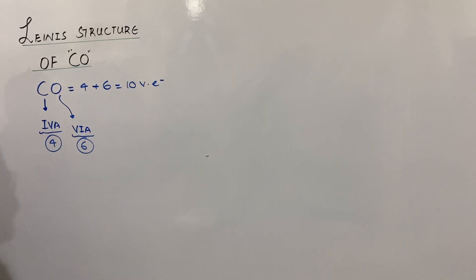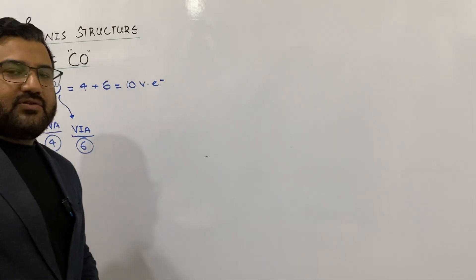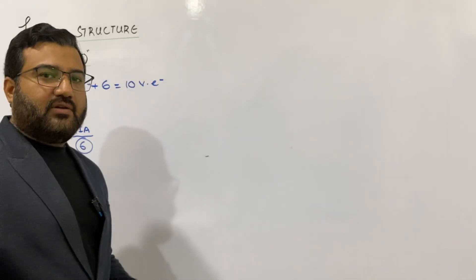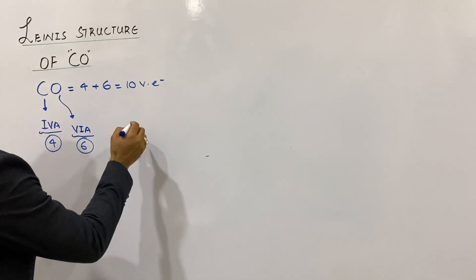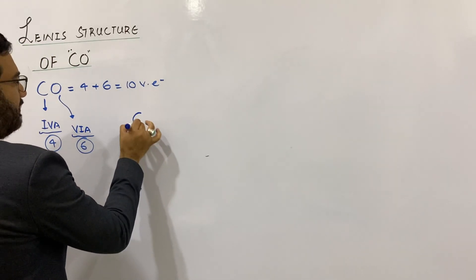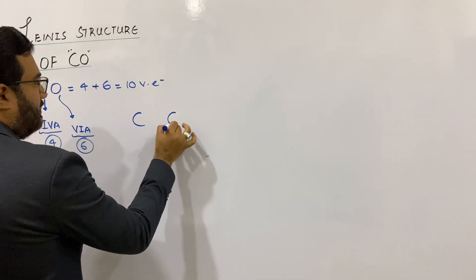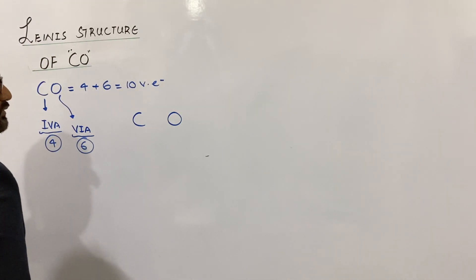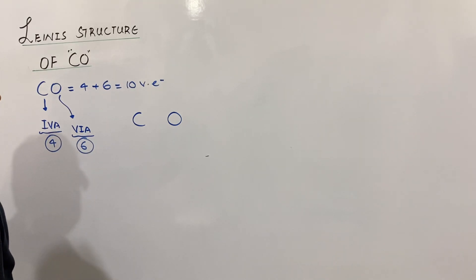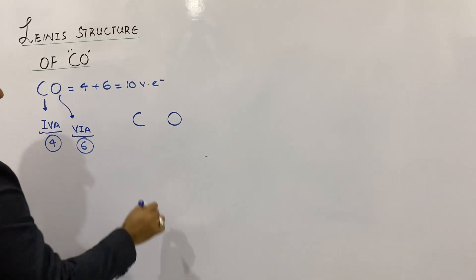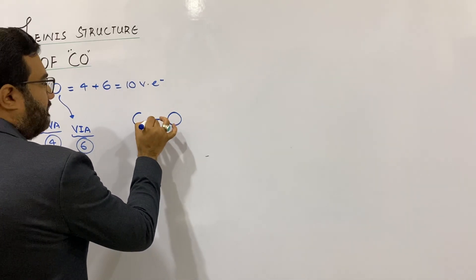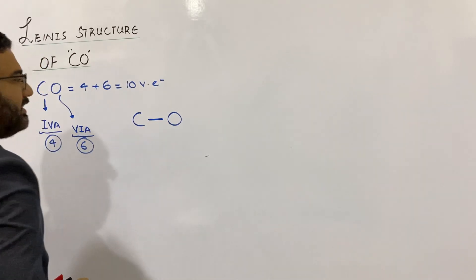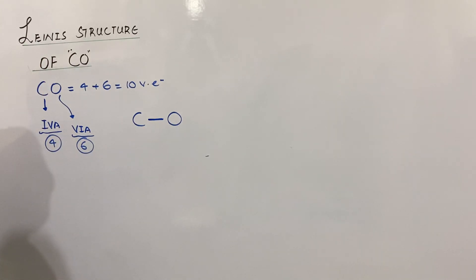After calculating the total number of valence electrons in the molecule, you will write down its skeletal form showing just the symbols of the two elements, and join the two atoms through a single bond.